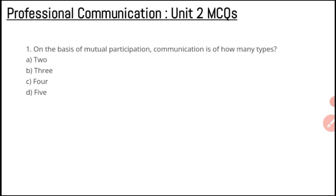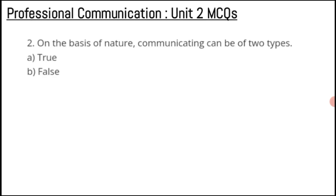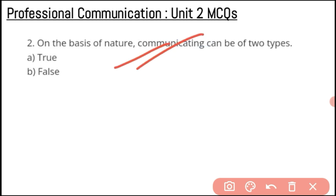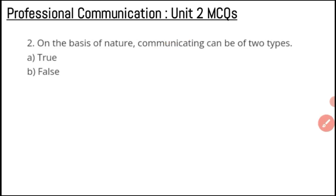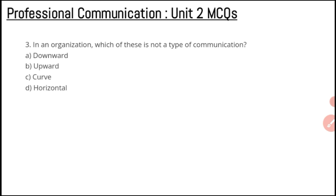On the basis of nature, the types of communication are formal and informal. The nature of communication can be formal or informal. What are the things needed to define formal communication and informal communication? You can make a note in the comment section — this will help you revise important things for your exams. If you haven't understood something, just go to the video section on my channel.